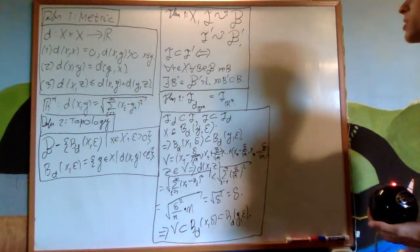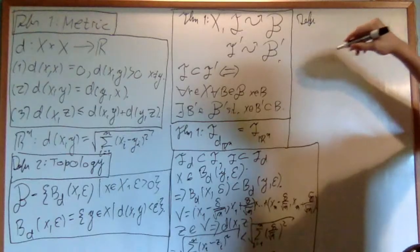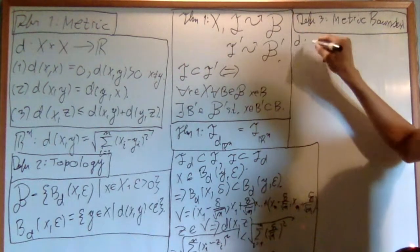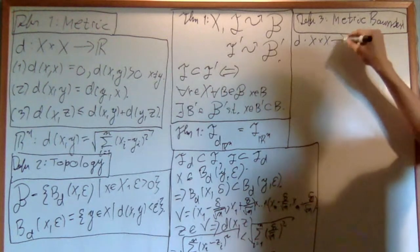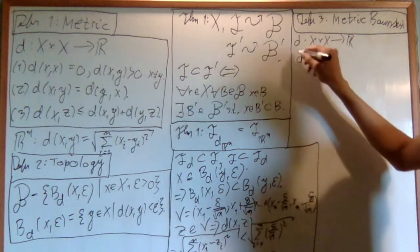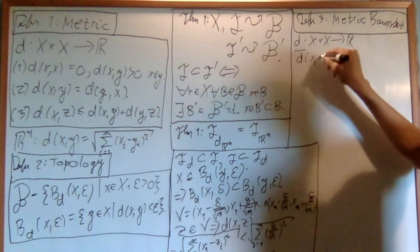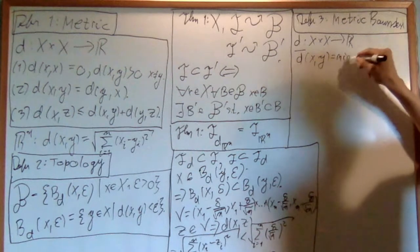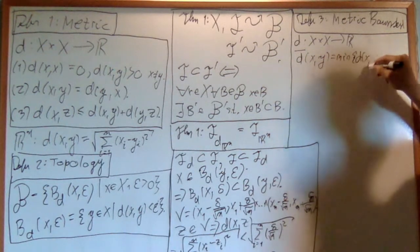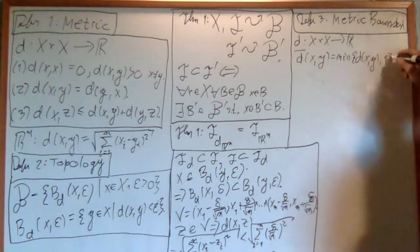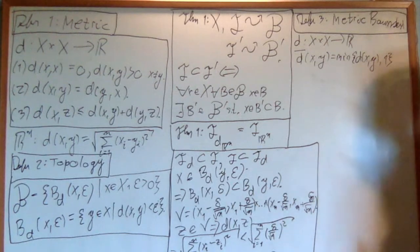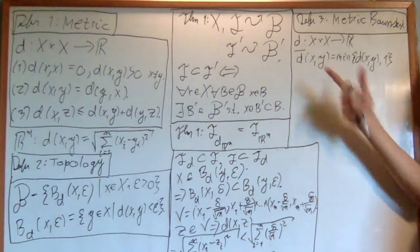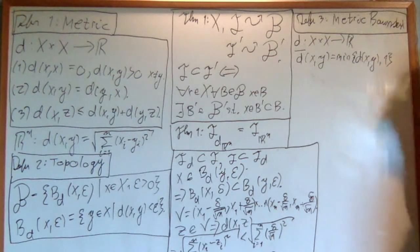Let me introduce some new metrics. Another metric is called the bounded metric. Given a metric d on X, I can construct d-bar, which takes two points x, y and outputs the minimum of the distance between them and 1. This creates a bounded version of the metric — the distance is unchanged if it's less than 1, and it's just 1 if it's bigger than 1.